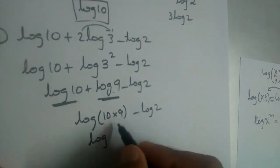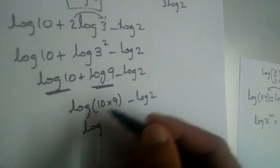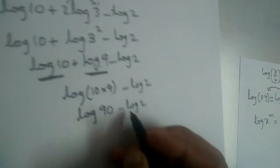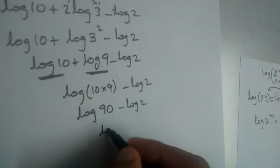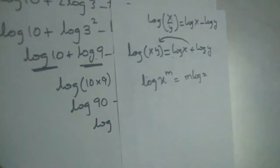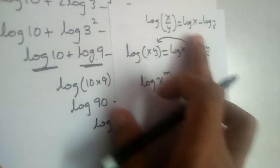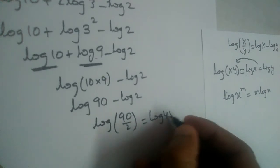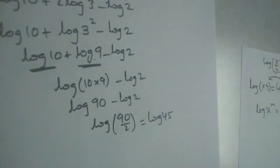You can write everything in single step, but I'm repeating the steps here. I'm writing each and every step without skipping anything. So this is log 90 minus log 2. This is minus sign, so if it is minus, we need to divide it. So log 90 by 2, log 45.